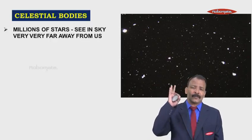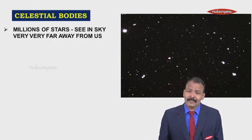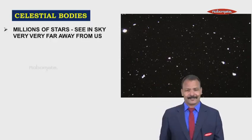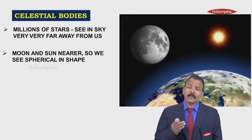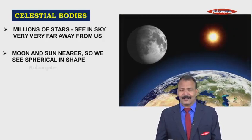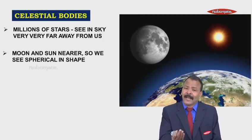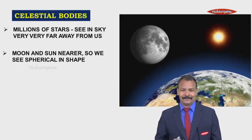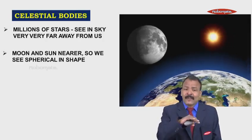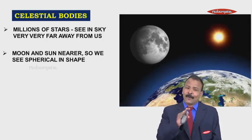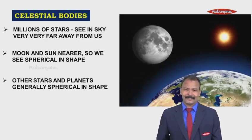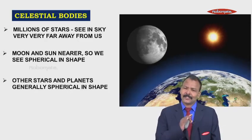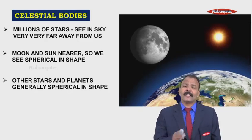Coming to celestial bodies, millions of stars that we see in the sky are very very far away from us. Then the moon and the Sun, if we take up, they are comparatively nearer so we can see the shape. They are spherical in shape, that is they have a ball-like shape. Other stars and planets generally they too are spherical in shape.